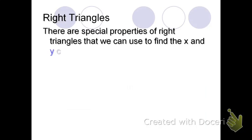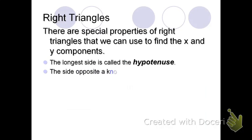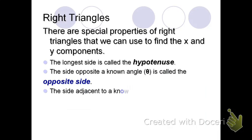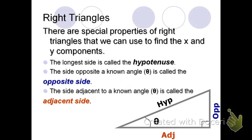So right triangles are pretty special. There's a lot of interesting things you can do with right triangles. In a right triangle, the longest side is called the hypotenuse. The side opposite a known angle, that symbol's a theta, is called the opposite side. And then the one that's touching it is called the adjacent side. The two sides of the triangle that form the right angle are referred to as the legs of the triangle. So you have the adjacent and the opposite. Those are the legs. And then you have the hypotenuse, which is the longest side.